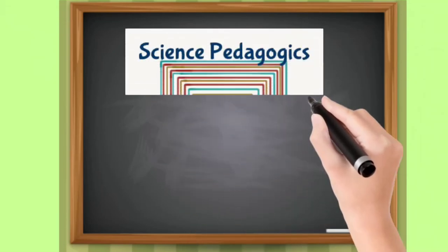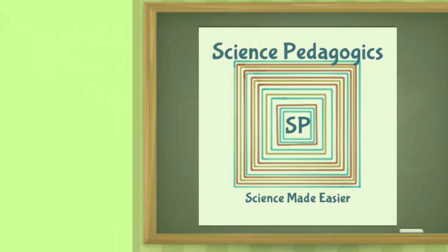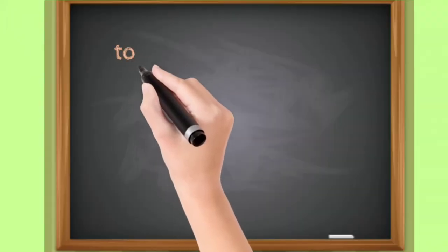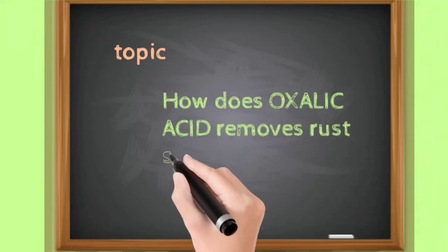Welcome to Science Pedagogics. Science made easier. Our today's topic is: how does oxalic acid remove rust from a surface?